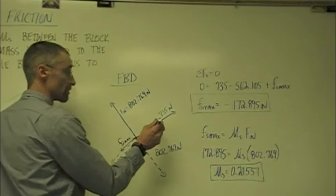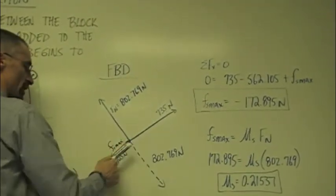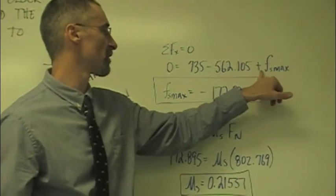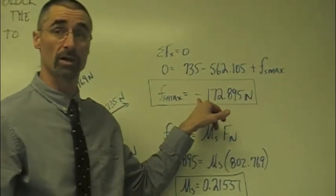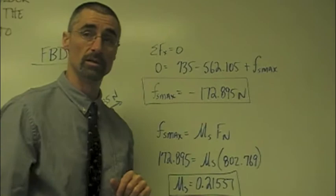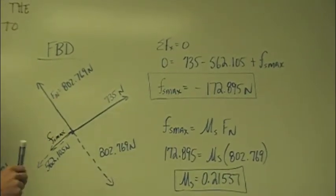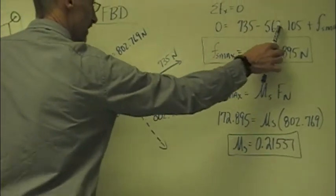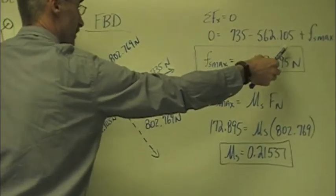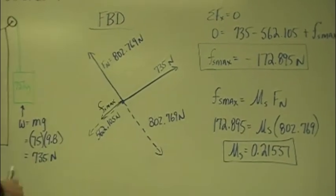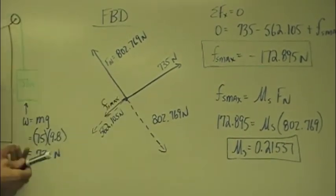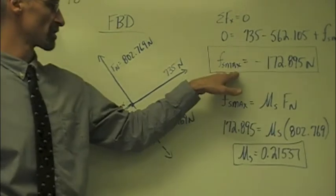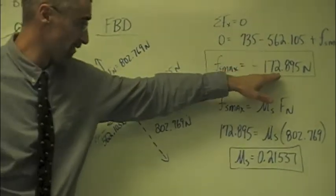Basically, we're going to take this one in the positive direction minus that one. And then you'll notice I put plus Fs max because sometimes you don't know the direction. So if you put plus there, you'll notice we came out with a negative. That negative is going to tell you that it's acting in the negative direction. If we subtract that from that, and then we say plus Fs max, we're going to take this over there, and we'll get negative 172. It's telling you that that force is pointing in the negative direction. So what that tells us is, at that point, the force of static friction has to be 172.895.